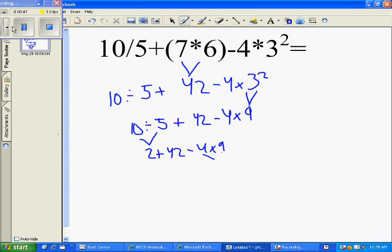Then you will do 4 times 9. That equals 36. Bring down the rest of the problem. And then 2 plus 42 equals 44. Subtracted from 36 equals 8, which is your final answer.